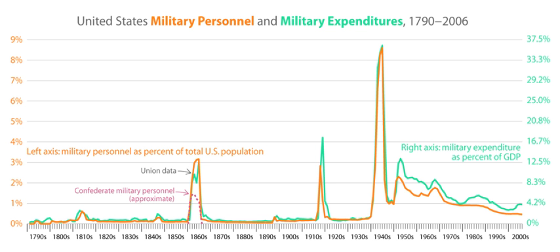Its most notable episode was a British expedition mounted in Jamaica against Cartagena, the main port of the Spanish colony in Colombia. The mainland colonies furnished a regiment to participate in the assault as British regulars under British command. The expedition ended in disaster, resulting from climate, disease, and the bungling of British commanders, and only about 600 of over 3,000 Americans who participated ever returned to their homes.